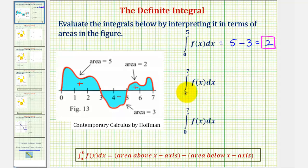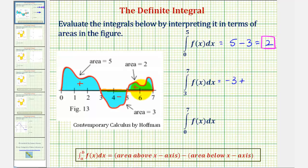Next we have the integral of f(x) from three to seven. On the interval from three to five, the definite integral would be negative three because the area is below the x-axis. Then on the interval from five to seven, the value of the definite integral would be positive two because the area is above the x-axis. So we have negative three plus two, which is equal to negative one.